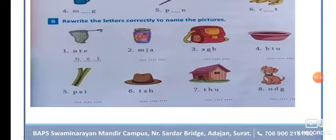Next one is a jam. J, A, M, jam. Third one is a bag. B, A, G, bag. Fourth one is a tub. T, U, B, tub.